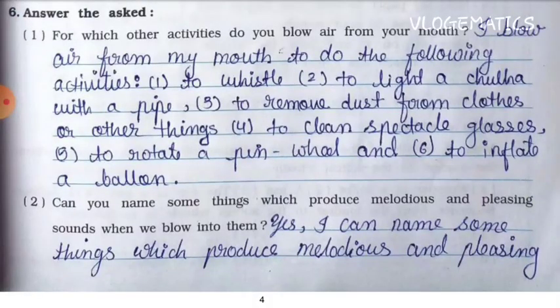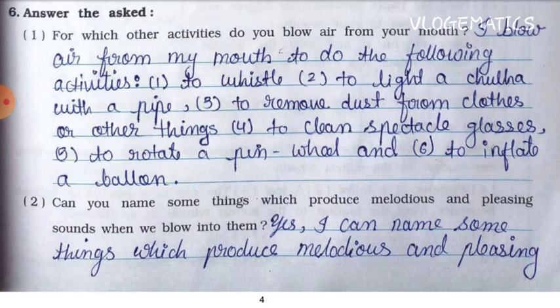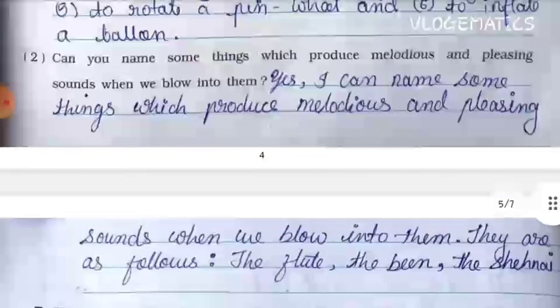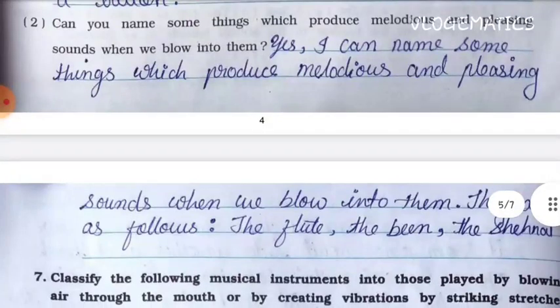Question six, number one: For which other activities do you blow air from your mouth? Answer: I blow air from my mouth for the following activities — to whistle, to light the chula with a pipe, to remove dust from clothes or other things, to clean spectacle glasses, to rotate a pinwheel, and to inflate a balloon.